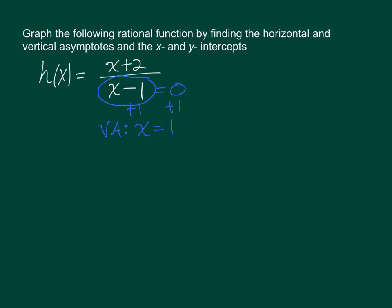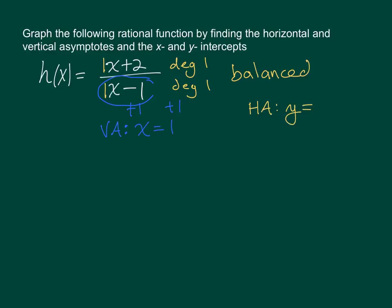The horizontal asymptote is found by comparing the degrees of the numerator and denominator. The degree of the numerator is 1, and the degree of the denominator is also 1. Since these degrees are the same, we call this a balanced rational function, and we need to take the ratio of the leading coefficients. In this case they are both 1, so we have a horizontal asymptote of y equals 1.